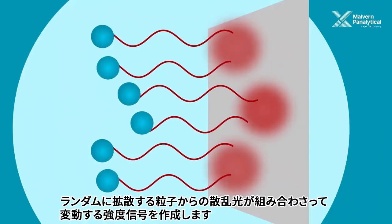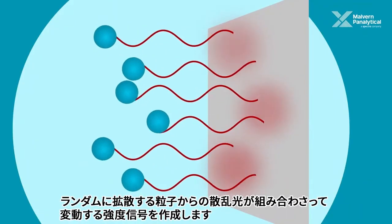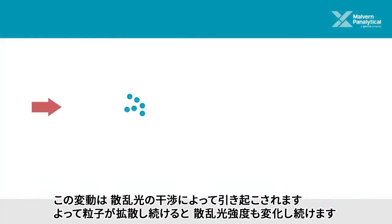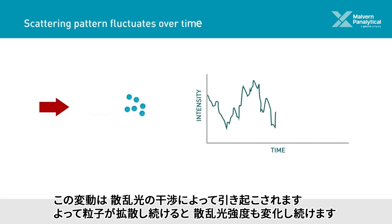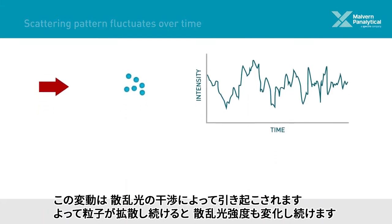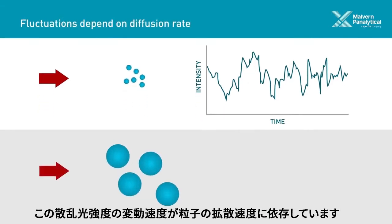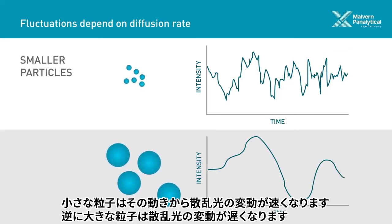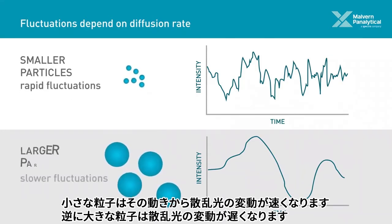The detected light scattered from lots of randomly diffusing particles combines to create a fluctuating intensity signal. The fluctuations are caused by the interference of light scattered by each individual particle, and the intensity will change over time as the particles continue to diffuse. The speed of these intensity fluctuations depends on the particle's diffusion rate — the smaller the particle, the more quickly it diffuses, which translates to more rapid fluctuations in scattered light, and vice versa.